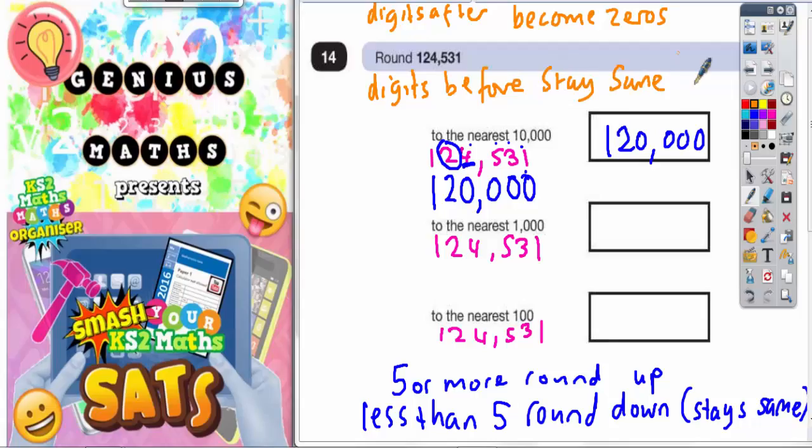So we'll try and apply that same rule again on the next question. So this time we're going to the nearest thousand. So the first thing to do is circle the thousandth digit. So we've got units, tens, hundreds, thousands. So the thousandth digit is the 4.